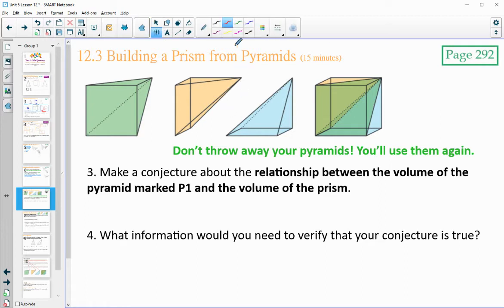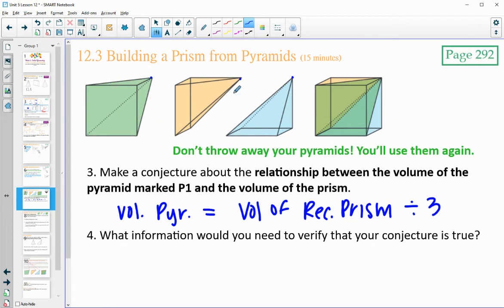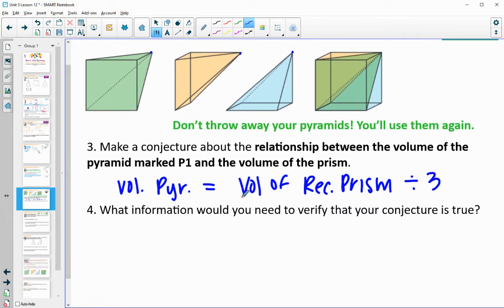And so the conjecture that most people came up with - we've got this rectangular prism and we made three pyramids. So maybe the volume conjecture is that the volume of each pyramid is equal to the volume of the rectangular prism divided by three, because we got it in three equal parts. Some people thought maybe these three pyramids were the same size. And so what would we need to verify that this conjecture is true? We would need to know that the three pyramids are equal in volume - have the same volume.